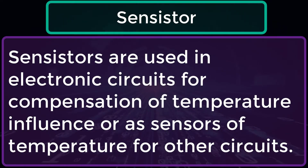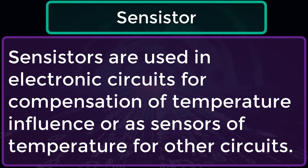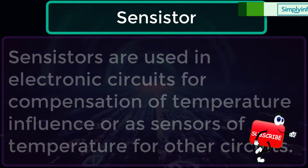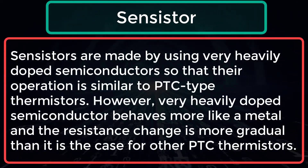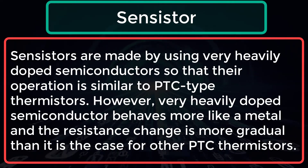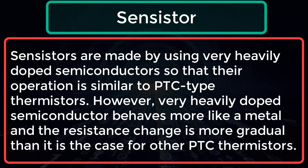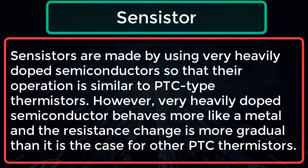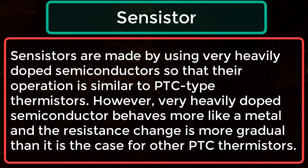Sensistors are used in electronic circuits for compensation of temperature influence, or as sensors of temperature for other circuits. Sensistors are made using very heavily doped semiconductors, so their operation is similar to PTC type thermistors. However, a very heavily doped semiconductor behaves more like a metal, and the resistance changes more gradually than in other PTC thermistors.